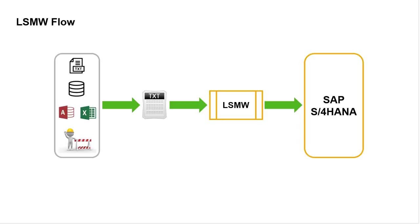The basic flow for an LSMW scenario for one business object begins with source data, which eventually must be in the form of one or many text files. The LSMW project consumes the source text files, maps their contents into the required format for the target object, and the data is loaded into an SAP system. That logical flow from source to target object is exactly the opposite of how you should think about data migration. You begin with the end in mind — you focus sharply on the target object and then work your way back towards the source data.